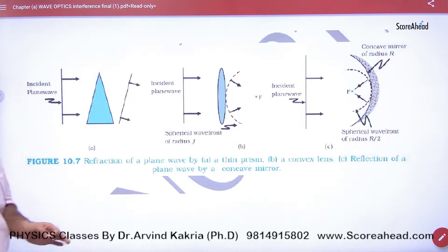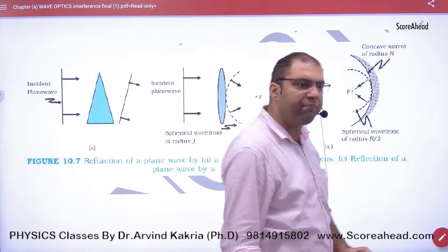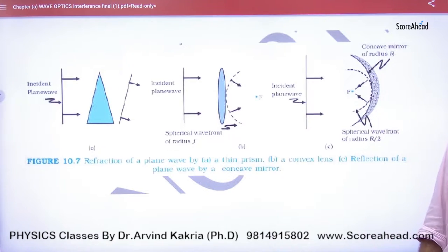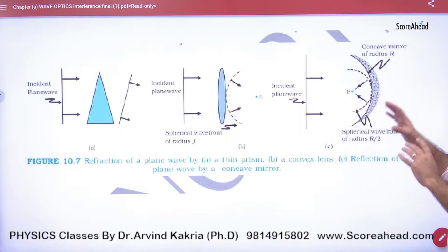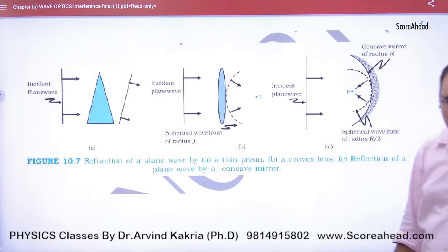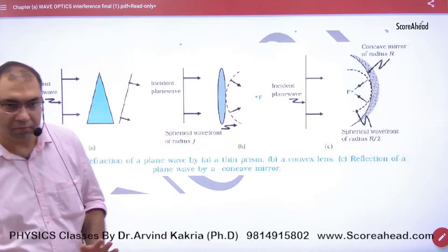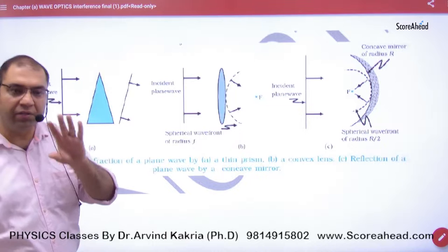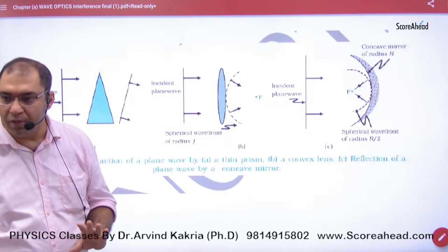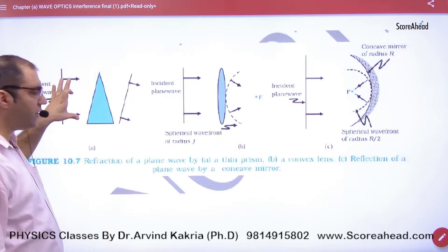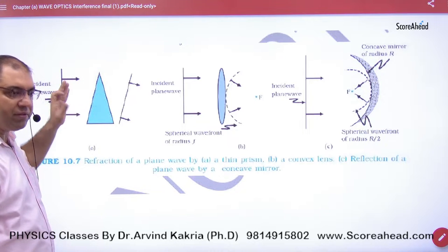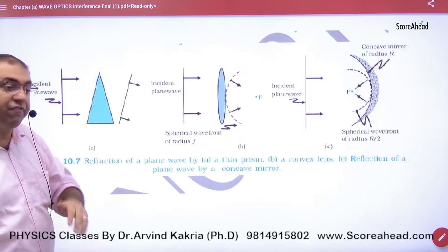This question is from the NCERT-CBSE paper. The question is, suppose you have a prism and a wavefront passes through it. According to Huygens' principle, when the plane wavefront comes and the light comes out, the wavefront will change direction.